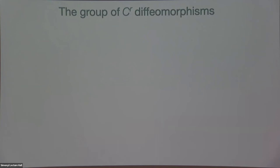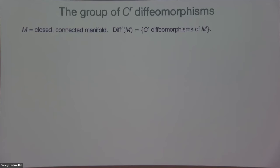This talk is about diffeomorphisms. I'm a smooth dynamicist — I study diffeomorphisms and flows. There's a flavor to this talk that emphasizes, to a certain extent, the fact that the space of all diffeomorphisms of a closed manifold is, in fact, a group. To set up some background, we fix a closed connected manifold, and Diff^R(M) is just the space of C^R diffeomorphisms of the manifold. R is an integer greater than or equal to one. It will play a role in what I'm going to say — what I'm going to say is not going to work for all R, and in fact the answers to some questions will depend on the value of R.